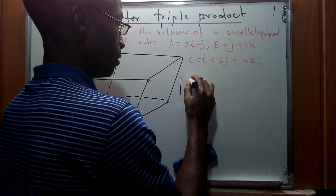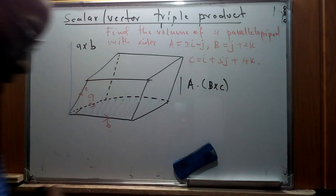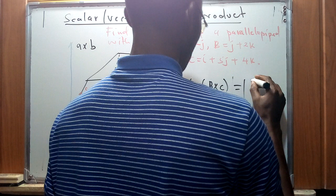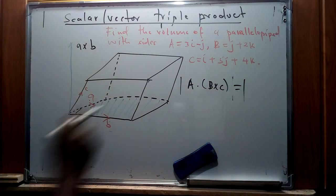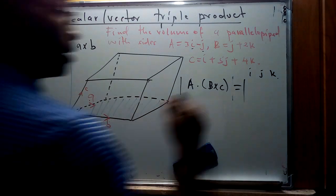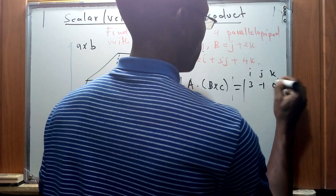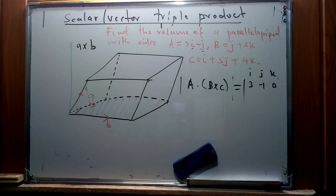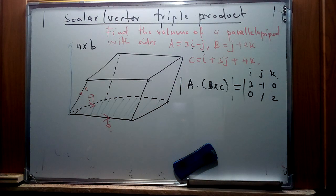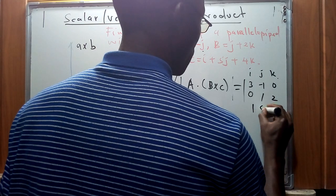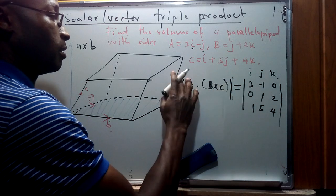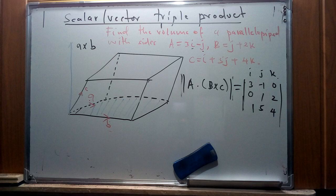We're going to use the formula for the scalar triple product — that is, the dot product of vector a with the cross product of vectors b and c. We'll find the absolute value of this product. For vector a, it only has i and j components, so k is zero, giving the row: 3, −1, 0. For b: 0, 1, 2. For c: 1, 5, and k being represented by the given value.